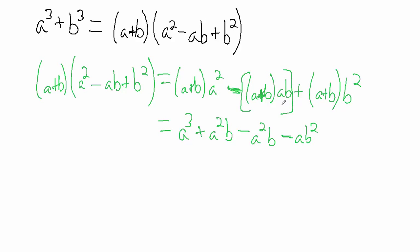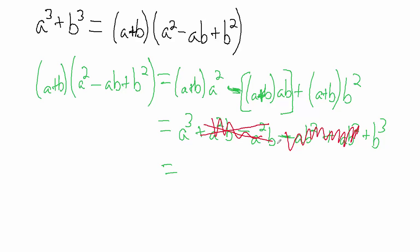So the minus sign affects everything in here — be careful about that. Then distributing the b² term: we get ab² and then plus b³. Now when we simplify: plus a²b minus a²b — those cancel. And minus ab² plus ab² — those also cancel. So we're just left with a³ + b³.